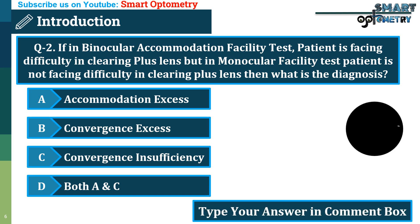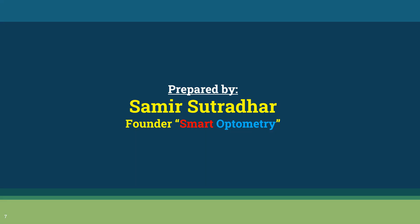In part 2, we will discuss the clinical features of convergence insufficiency. Till then, stay with Smart Optometry and study optometry smartly. The answer to Question 1 is C: Convergence insufficiency.